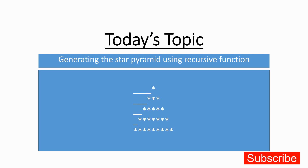Hi everyone and welcome back to the series of Python Unleashed. My name is Ajay and today's topic is we are going to develop a Python program for generating the asterisk pyramid that is in front of you. This is the pattern that we are going to generate using a recursive function. You might have already developed such a program using loops.